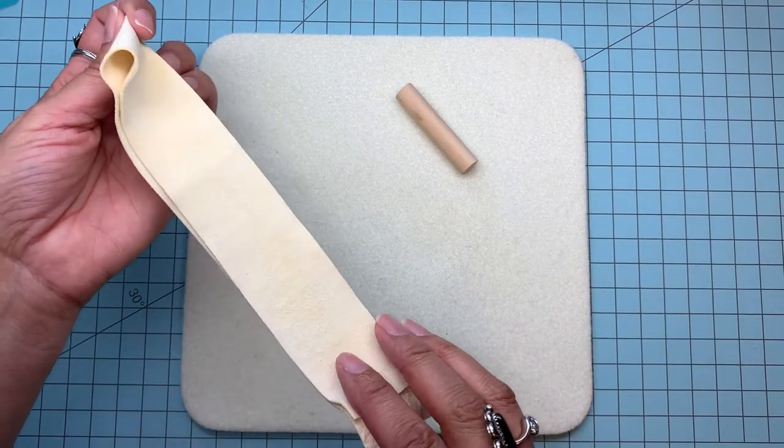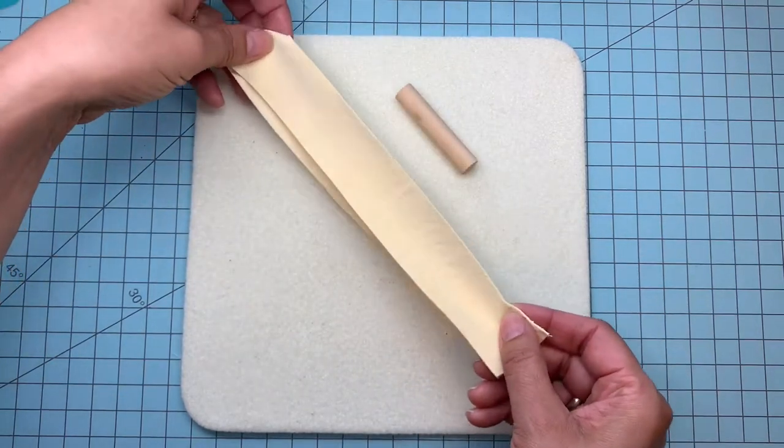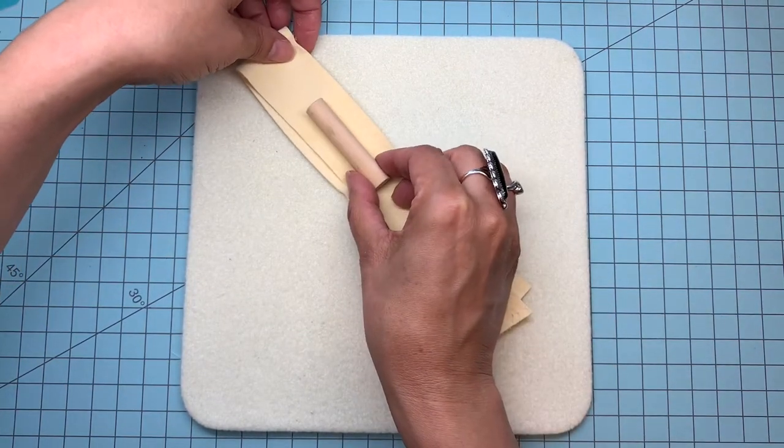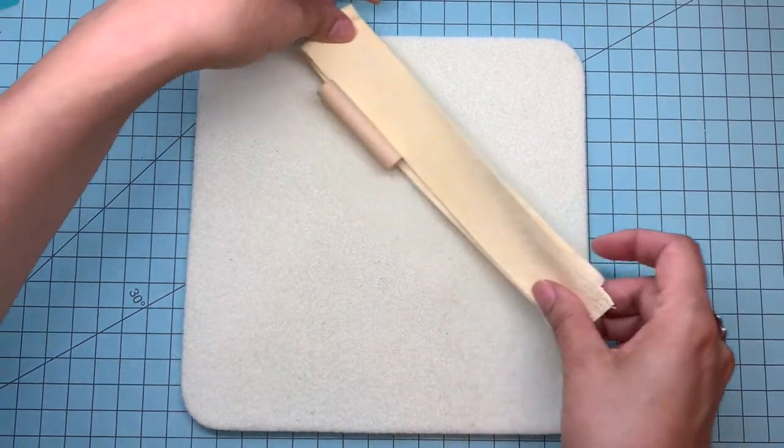Some buckskin leather, or this is a car chamois from the automotive store. Cut a little bit wider than your dowel, and just long enough to make it as long a fringe as you want.